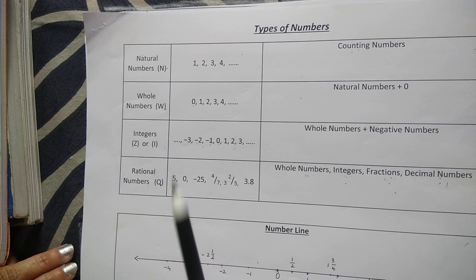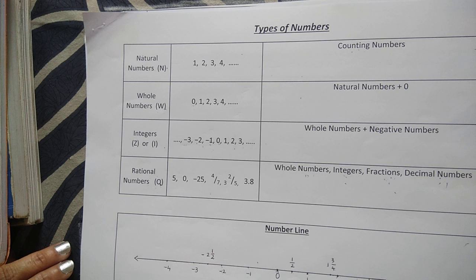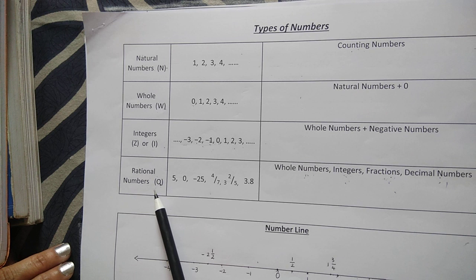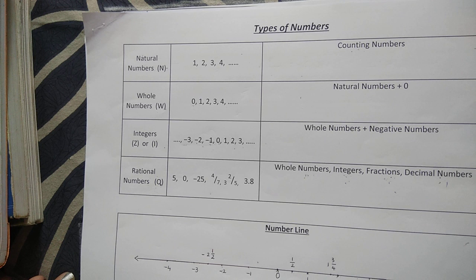Next, integers — the whole numbers and the negative numbers are called integers. Now one more type of numbers that we are going to learn today is rational numbers. All the whole numbers, integers, fractions, decimals — these numbers come under rational numbers. Rational numbers are denoted by the capital letter Q.